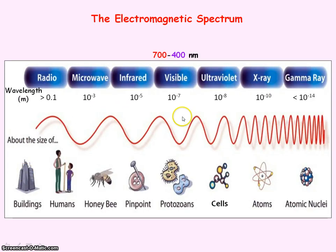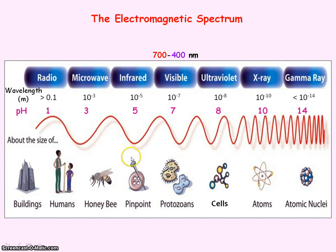You need to know the typical values for each electromagnetic wave, and a former student showed me a really good way of remembering these values using the pH scale. The wave in the centre is visible light, representing a pH of 7, so the wavelength of visible light is in the order of 10 to the minus 7 metres.